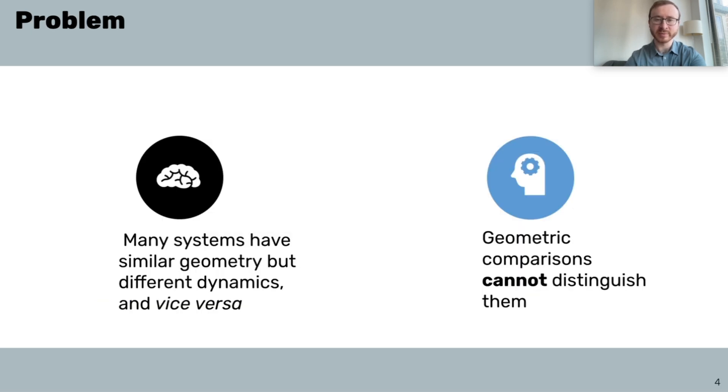And this example raises a problem for a wide range of different pipelines in computational neuroscience that require comparing systems. And it's not limited to this specific case. It's incredibly easy to construct systems that disentangle geometry and dynamics. Yet state-of-the-art comparison methods like RSA, CKA, or Procrustes are all geometric, which means that these cases are in some sense adversarial for them.